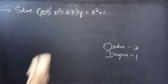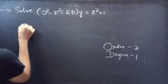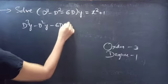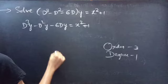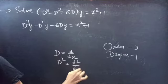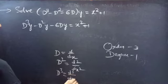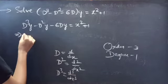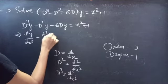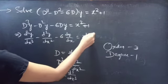Or you can just write the equation as D³y - D²y - 6Dy = x² + 1. We know that D is a differential operator. Then we can write D² as d²/dx² and D³ as d³/dx³. So we can write our equation as d³y/dx³ - d²y/dx² - 6(dy/dx) = x² + 1.